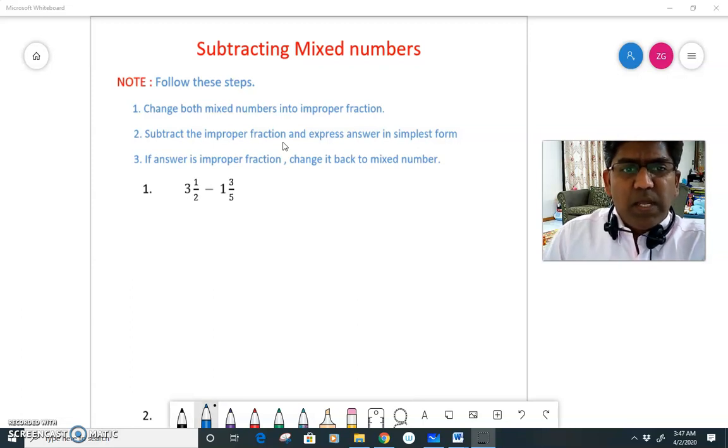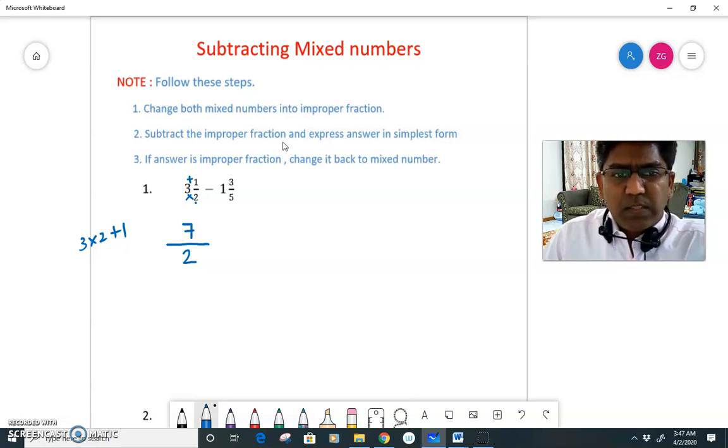Let's have a look at the first example. The mixed number is 3 1/2. I need to convert this into an improper fraction. So the denominator 2 will remain same. To get the numerator, you multiply 3 and 2 and add 1. So I need to do 3 times 2 plus 1. So 3 times 2 is 6, 6 plus 1 is 7. So I get the answer 7/2.